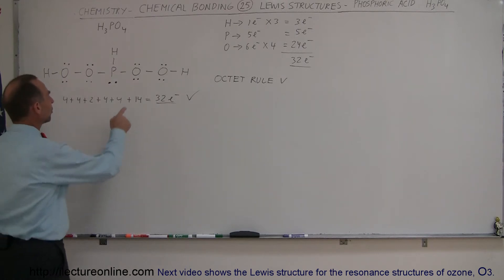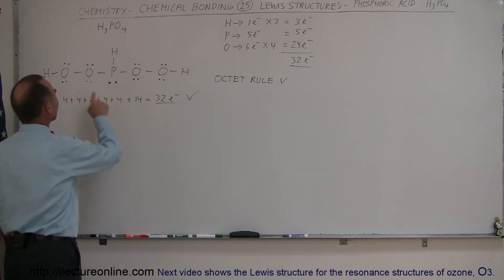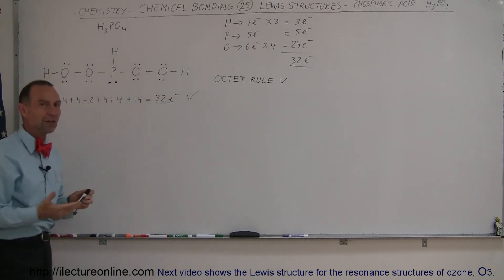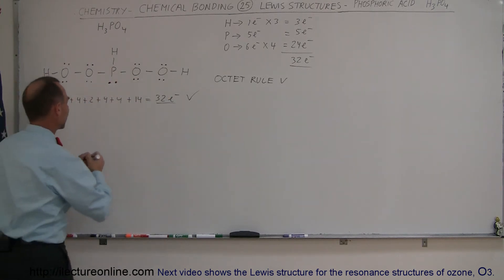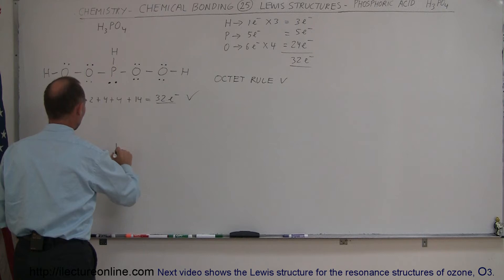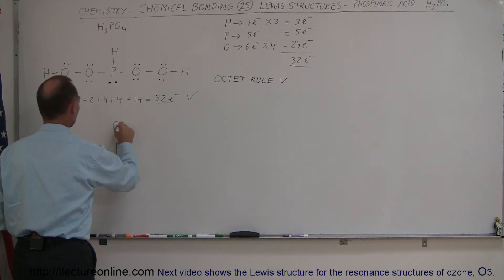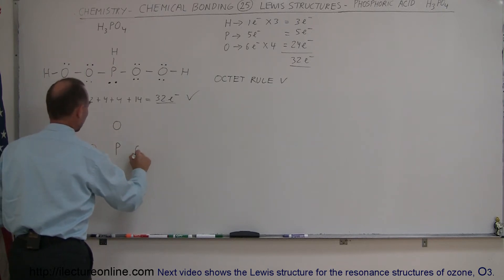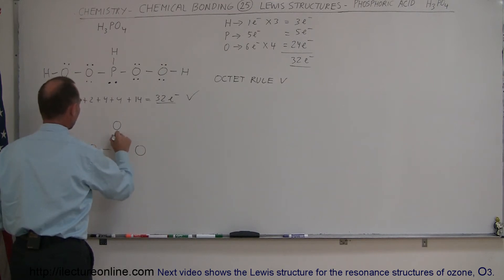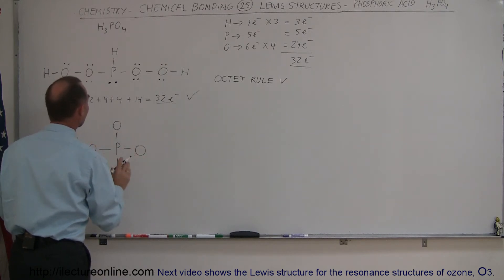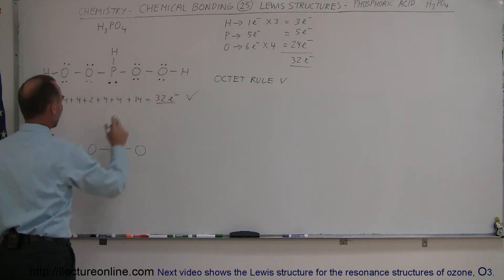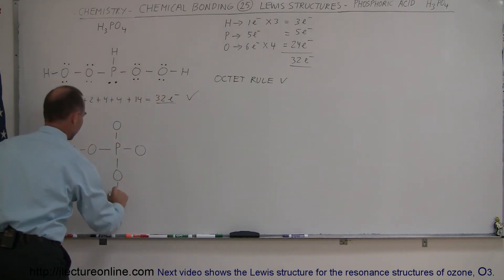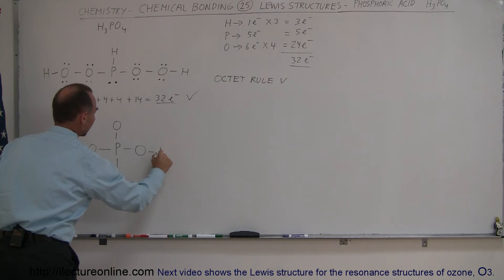If we place the phosphorus atom in the middle and put the four oxygen atoms around it, let's see what we end up with. We have one phosphorus with an oxygen, an oxygen, an oxygen, and an oxygen around it. We start with a single bond to each of those. Then, since we have three hydrogens, we can put one on the other side of three of the oxygens.